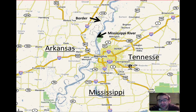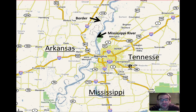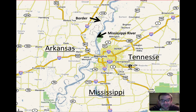Looking further south in the United States, you can see where the Mississippi River border was originally established, and how over time the river has changed its course — it's no longer in the same place it was before. And yet the political boundary remains where it was originally drawn, creating a visible discrepancy between the river's current location and the established border.